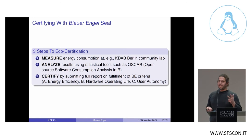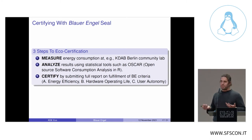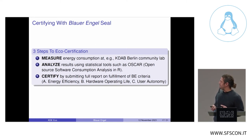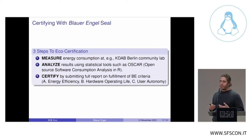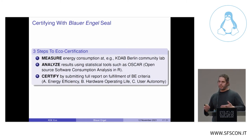The three steps are: Measure, Analyze, and Certify. First, measure energy consumption at a community lab — we're setting one up in December at KDAB Berlin. Once you have the results and data, you can use OSCR (the Open Source Software Consumption Analysis in R tool) to analyze the data and get a report, which can then be used for your Blauer Engel application.